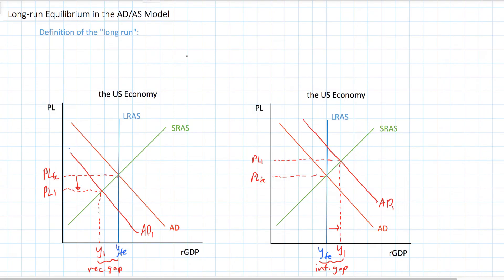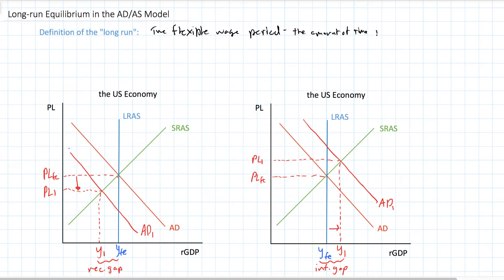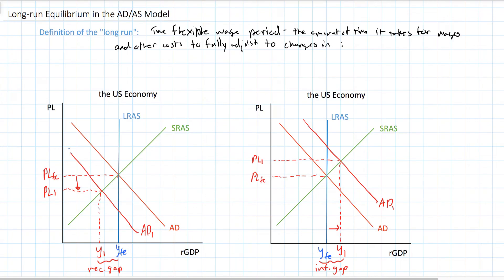Let's now transition to the long-run. What is the long-run in macroeconomics? The short-run is defined as the fixed wage period; the long-run is defined as the flexible wage period. It's the amount of time it takes for wages to fully adjust to the price level and the level of demand in the economy — and other costs of production, not just wages for workers, but also rents for land, interest rates for capital, and any other costs that firms face.